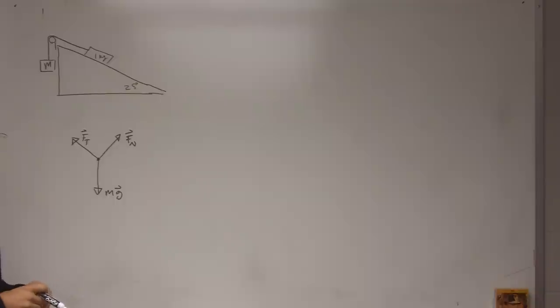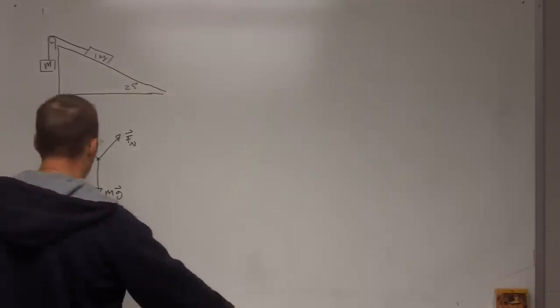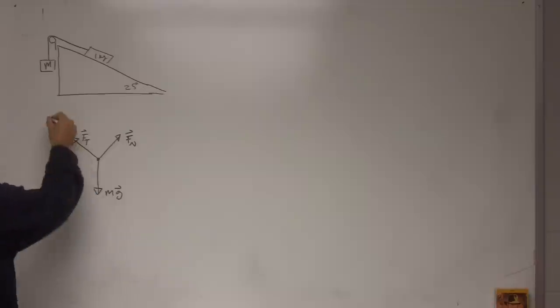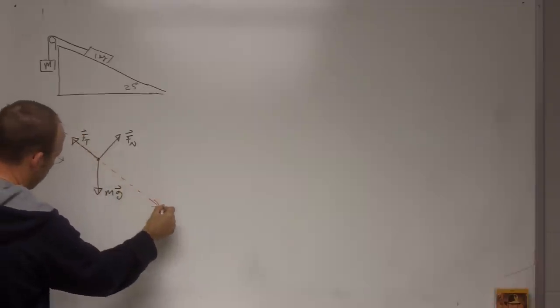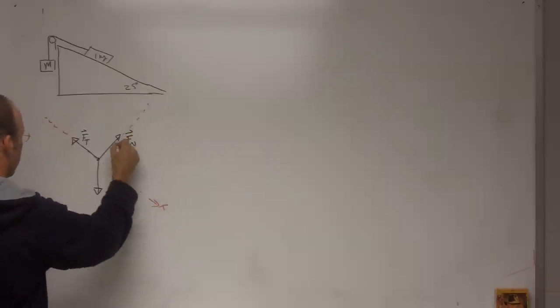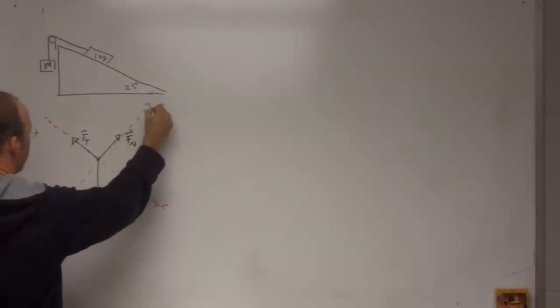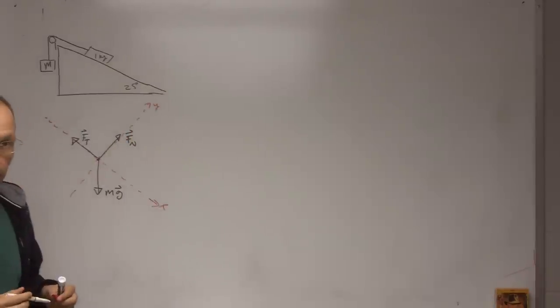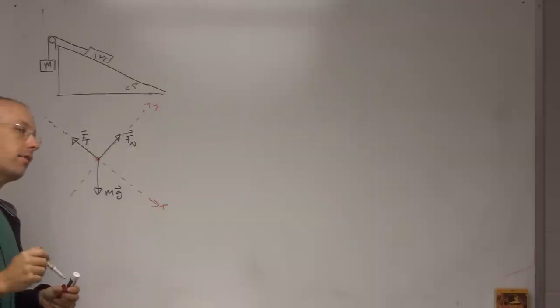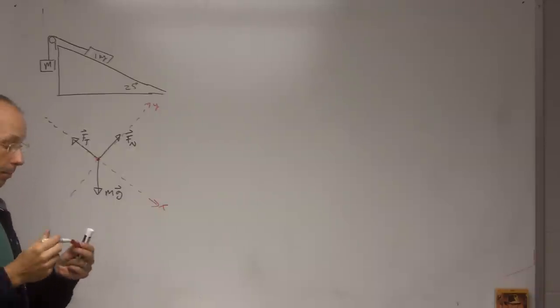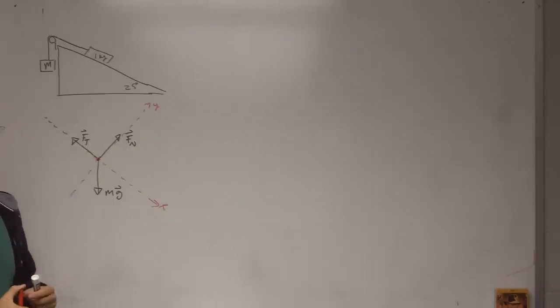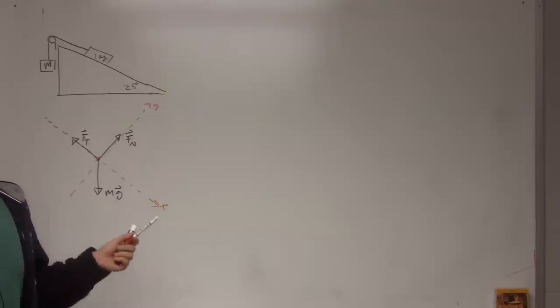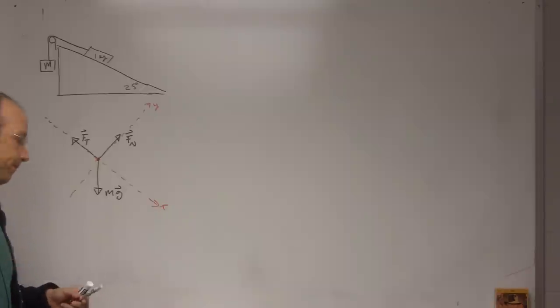But I'm not going to do that. You should do that on your own and see that you get the same answer. I'm going to pick this as my x-axis and this is my y-axis. Why would I do that? I would do that because I have a lot of experience solving these kind of problems and I know that this is going to make things easier. Maybe I should have done it the hard way so you can see how you could still do it, but I want you to do it that way. But if you look, this is nice because now I only have one vector that I have to find an x or y component. This is just in the y direction, that's just in the x direction, so it makes things easier.